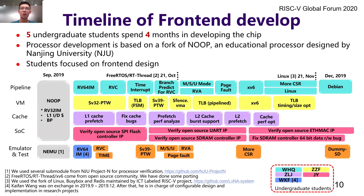This slide shows the front-end development timeline of Nutshell. There were 5 to 8 students participating in this project, and the development of Nutshell began in September. With the help of our developing infrastructure, it took us only 4 months to finish the design of Nutshell. Our students focused on pipeline, virtual memory system, cache, SoC, and emulator respectively. The processor development is based on an educational processor called NPC by Nanjing University. The reason we use NPC is because it comes together with the verification framework we used. By starting the design from NPC, we do not need to adapt the verification framework from scratch.